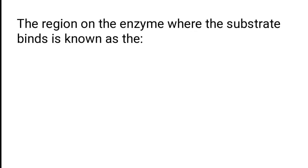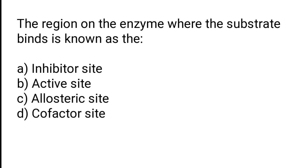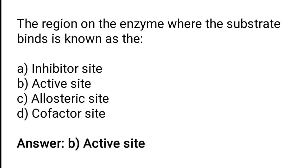The region on the enzyme where the substrate binds is known as the — A) inhibitor site, B) active site, C) allosteric site, D) cofactor site. The correct answer is option B. The region on the enzyme where the substrate binds is known as the active site.